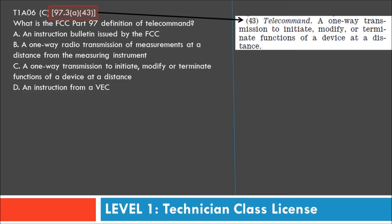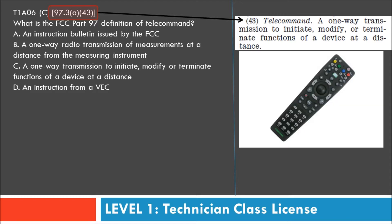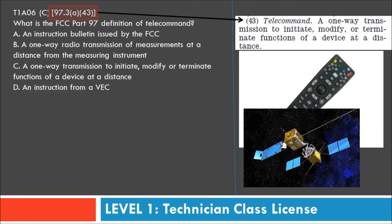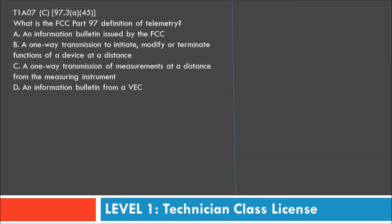Looking at 97.3 paragraph 43, a telecommand is a one-way transmission to initiate, modify, or terminate functions of a device at a distance. Think of a TV remote — you control your television one-way at a distance, modifying functions like channel, volume, or turning it off. More relevantly, you can control a satellite with one-way communication. The answer is C.